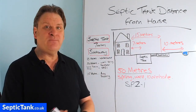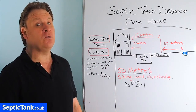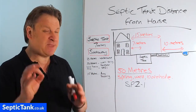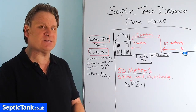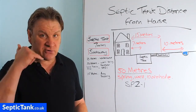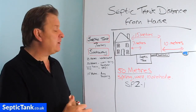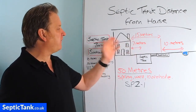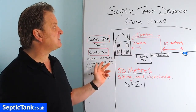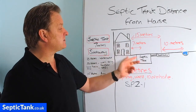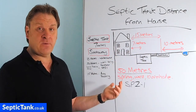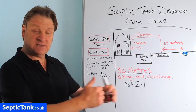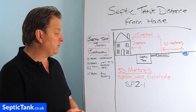I'm not saying do not follow Section H of the building regs — there are some very good principles in there. But that's all they are: principles and guidelines. If in doubt, consult your local planning officer and talk to your local building control officer, who will advise you regarding the distances of septic tanks and soakaways from your buildings if you cannot manage the seven metre and 15 metre distances.